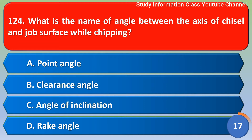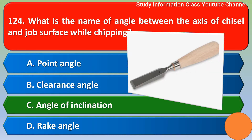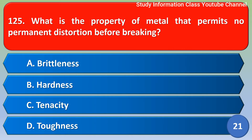Next question: What is the name of the angle between the axis of the chisel and the job surface while chipping? Option A: point angle, Option B: clearance angle, Option C: angle of inclination, Option D: right angle. The correct answer is Option C — angle of inclination.